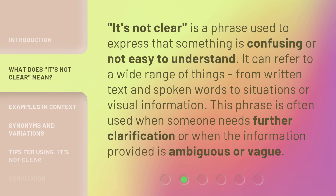'It's not clear' is a phrase used to express that something is confusing or not easy to understand. It can refer to a wide range of things, from written text and spoken words to situations or visual information. This phrase is often used when someone needs further clarification, or when the information provided is ambiguous or vague.